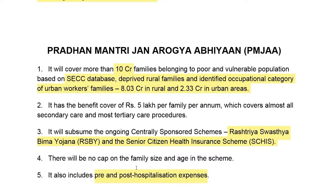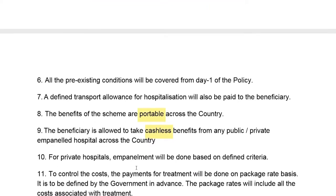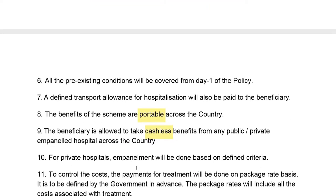Pradhan Mantri Jan Aarogya Abhiyan is going to subsume ongoing centrally sponsored schemes like Rashtriya Swasthya Bima Yojana and the Senior Citizen Health Insurance Scheme. There is no cap on family size — it can be large or small — and there is no cap on age either. It includes pre and post hospitalization expenses, a defined transport allowance is provided to the beneficiary, and these benefits are portable across the country.